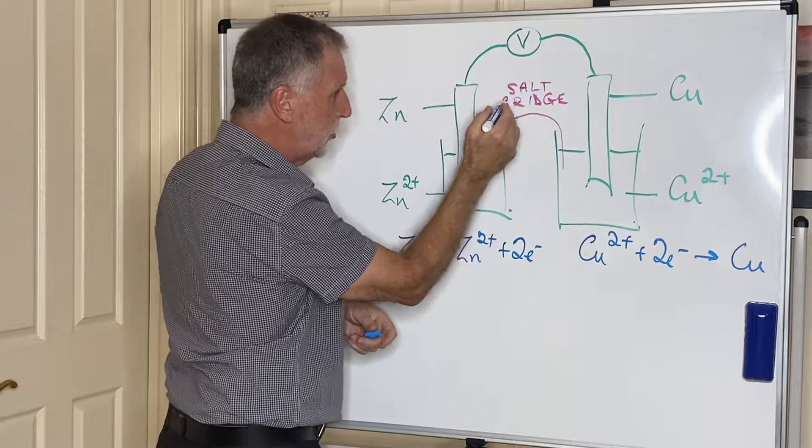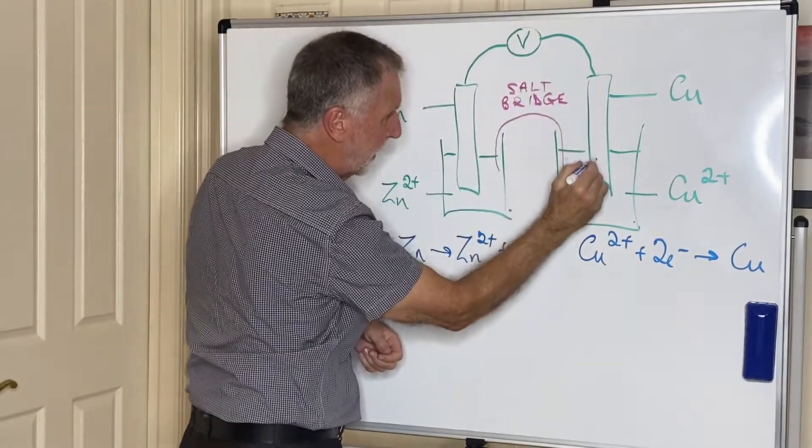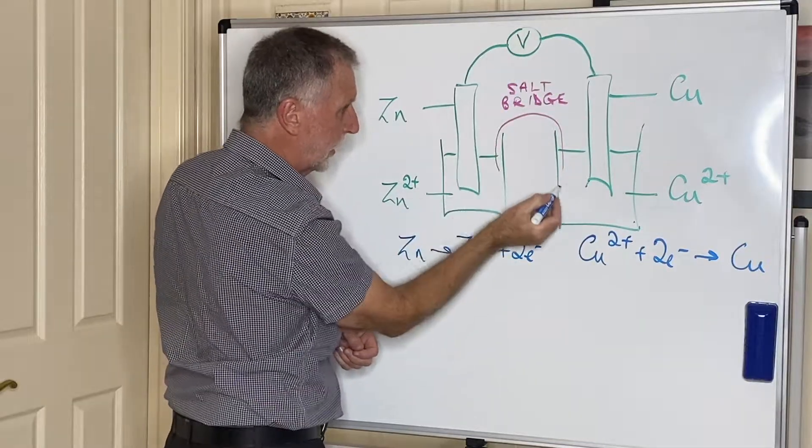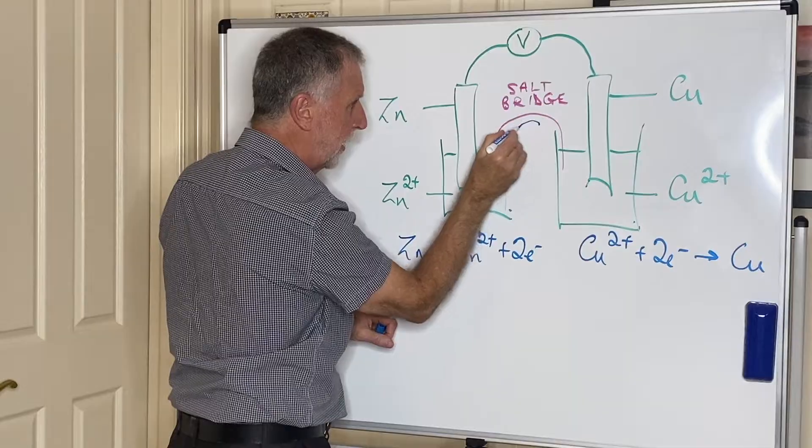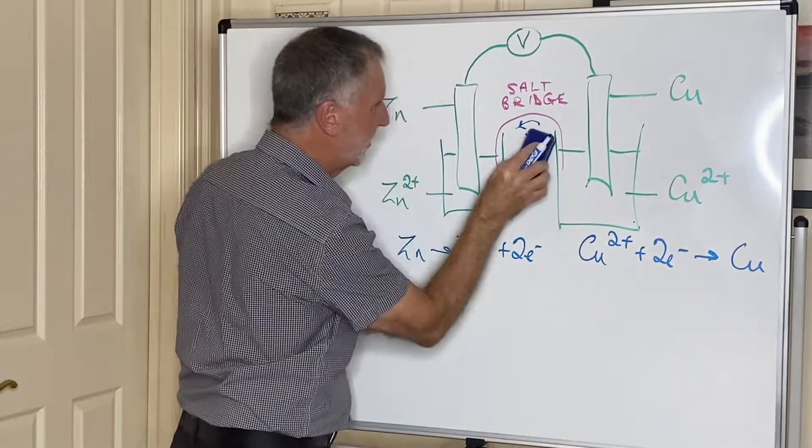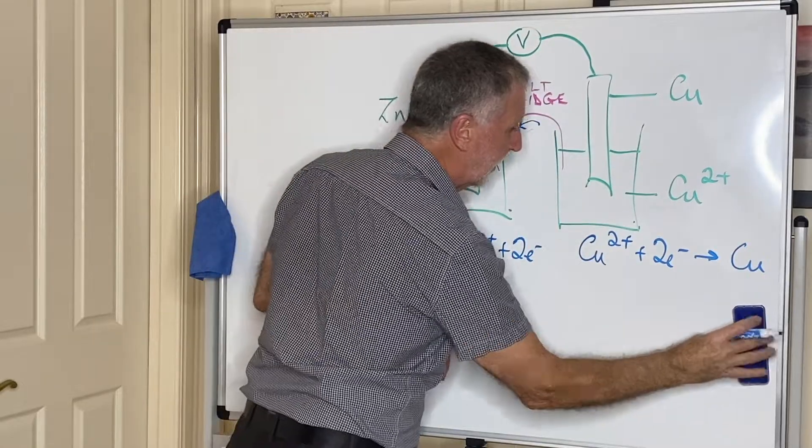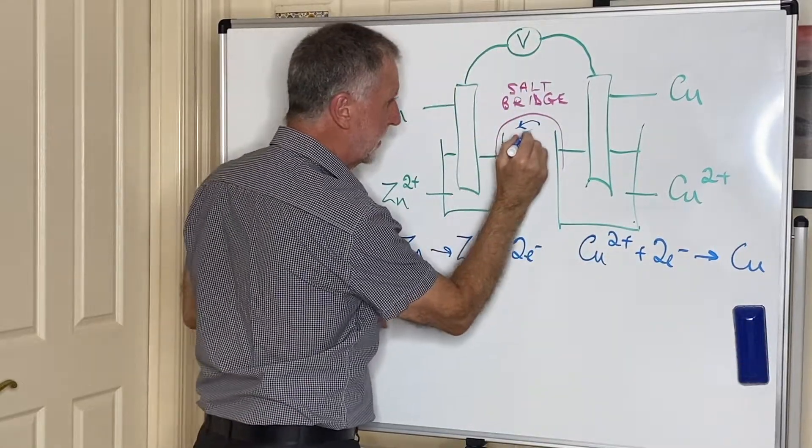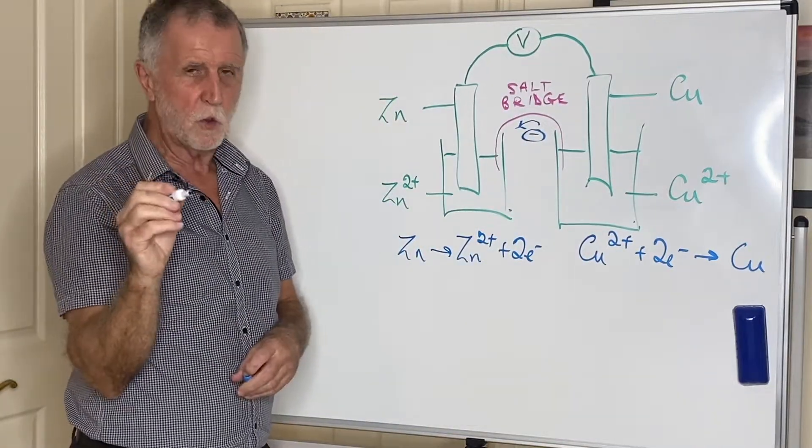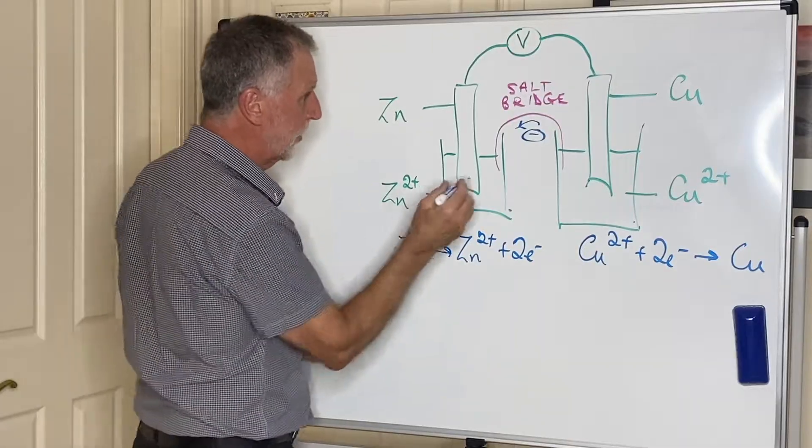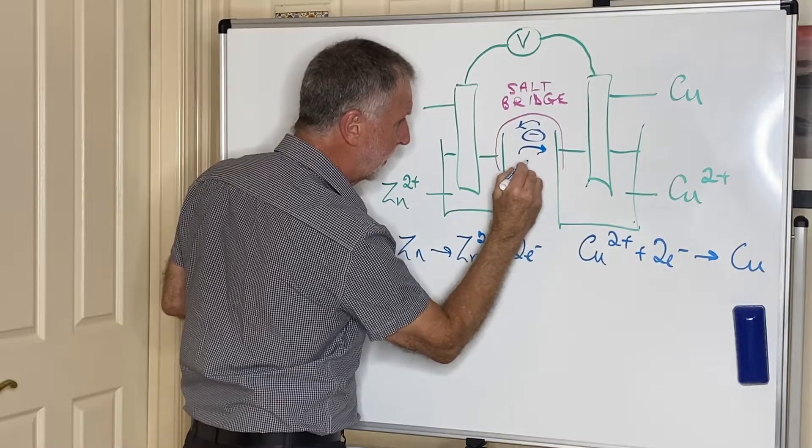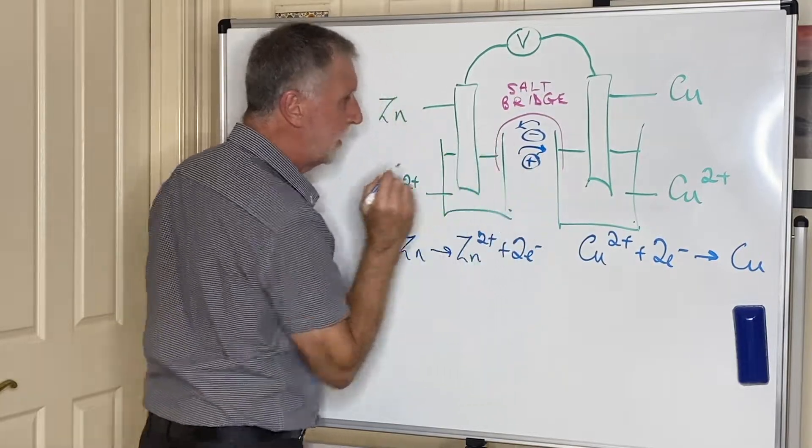Inside the salt bridge, we have electrons going this way and negative ions traveling to complete the circuit. Negative ions, not electrons—that is one thing they definitely are not. Electrons cannot travel through anything other than wires or graphite. Electrons can't travel through a salt bridge.